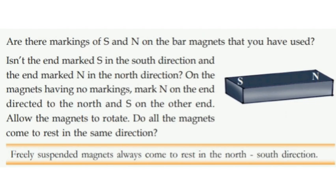Do all the magnets come to rest in the same direction? You can see that each magnet settles in a position. Freely suspended magnets always come to rest in the north-south direction.